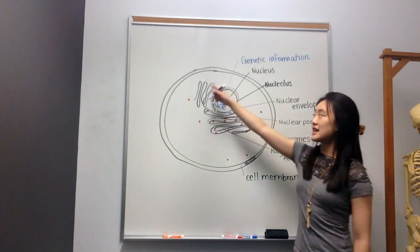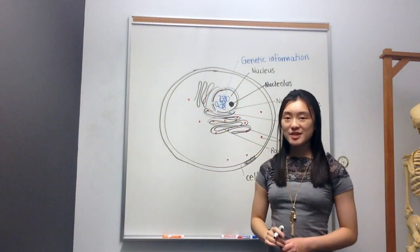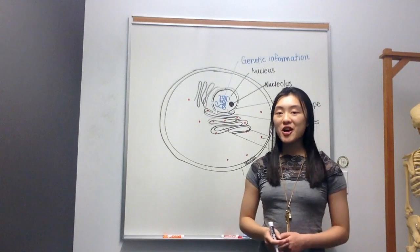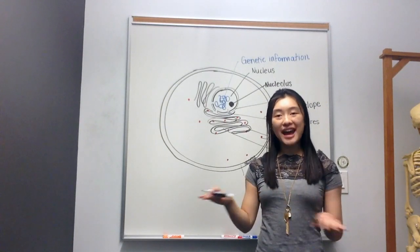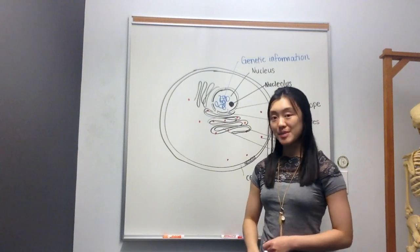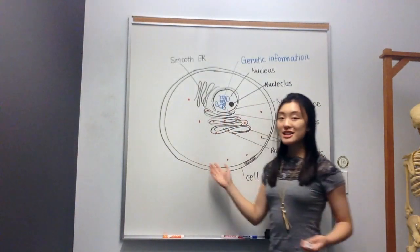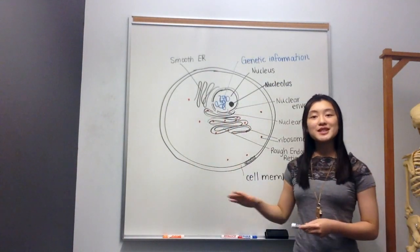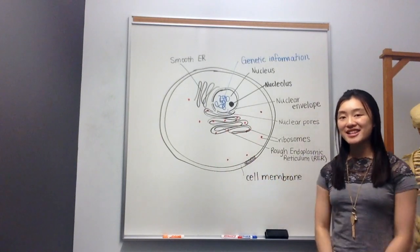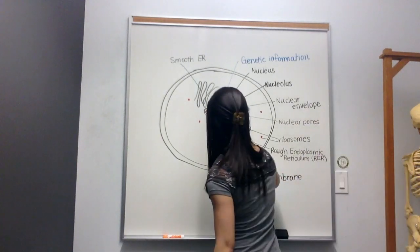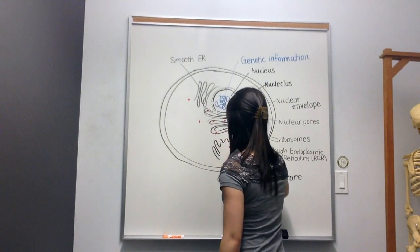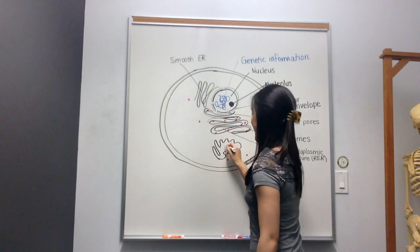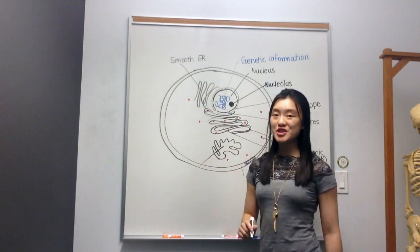On the other hand, this endoplasmic reticulum lacks ribosomes. Therefore, we call it a smooth endoplasmic reticulum because it doesn't have that grainy texture due to the ribosomes. We'll talk a little bit about the functions later, but first let's get everything down and then I'll elaborate a bit more on the functions. So over here, I'll draw a bit of a similar structure, just a blob, and we call this one the Golgi apparatus.